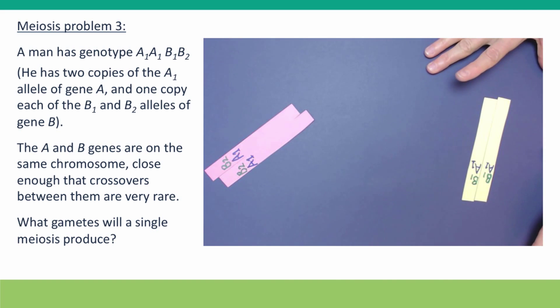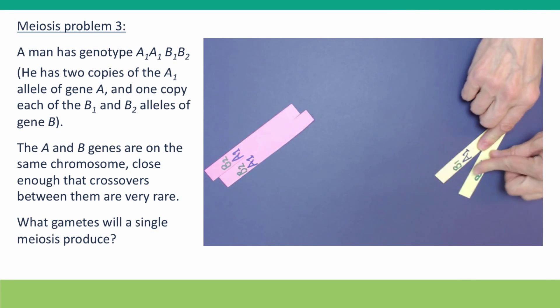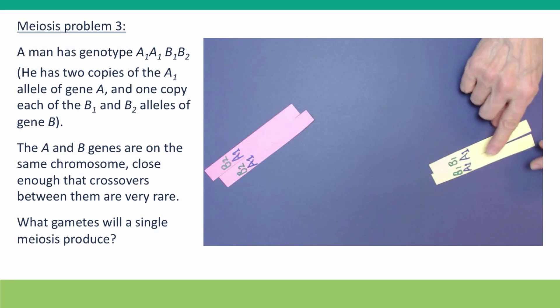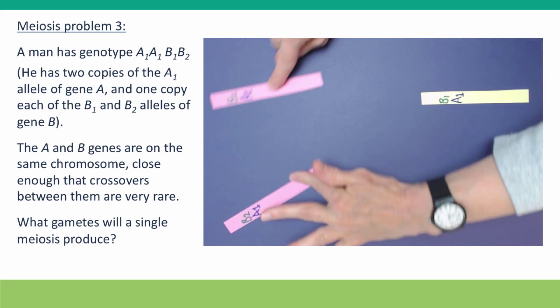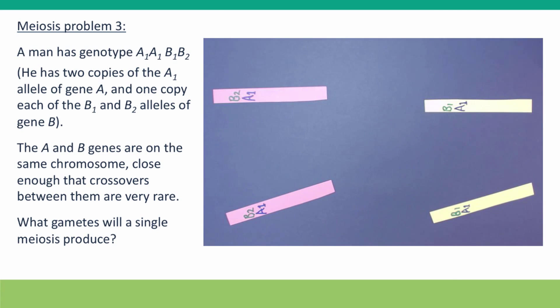The two products of meiosis I—again the chromosomes. The sister chromatids are attached by spindle fibers and they're pulled apart. Two cells are B1A1, two cells are B2A1.